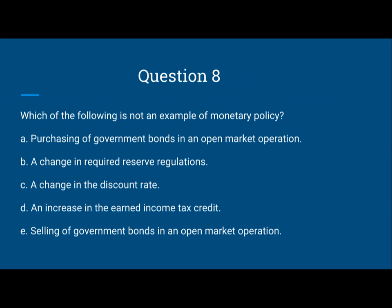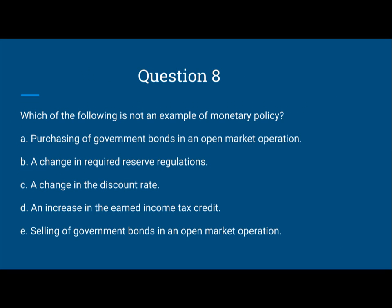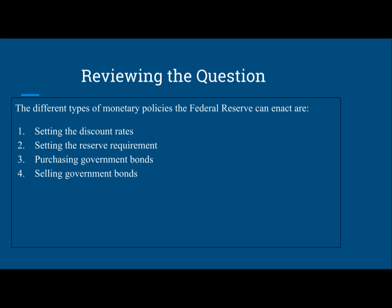B. A change in required reserve regulations — this is a monetary policy the Federal Reserve can enact, which corresponds to number 2: setting the reserve requirements. Now C, a change in discount rate — that is also something the Federal Reserve can enact, corresponding to number 1: setting discount rates.